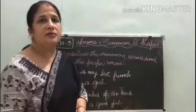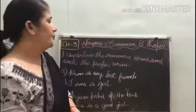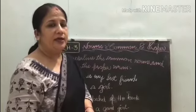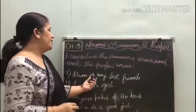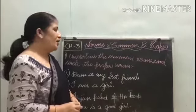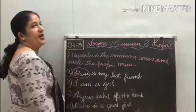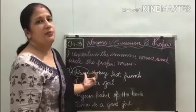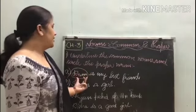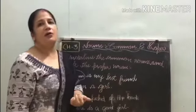Clear students? So students, now I'm coming to our exercise. Our exercise is: underline the common nouns and circle the proper nouns. Ismein aapko kya karna hai? Common noun pe underline karna hai, or proper noun pe circle. Okay, clear? So let's start. First sentence is: Ram is my best friend. Ram is a proper noun — Ram pe circle karo. And 'friend' kya hua? Common noun — friend pe underline karo.